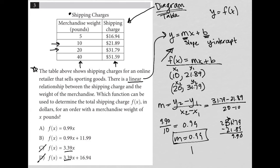like what does B equal? So to find that, I'm going to go back to my equation, F of X equals, instead of MX, I'm going to say 0.99X plus B.